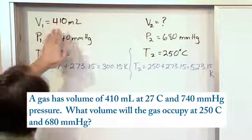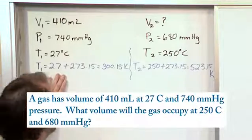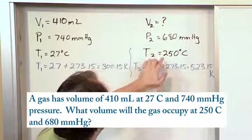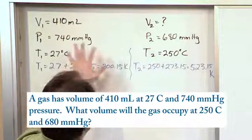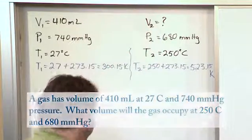We know the initial volume, the initial pressure, the initial temperature. And we know the final pressure, the final temperature, which have changed. So we've changed two things. And we're trying to figure out what the new volume is.